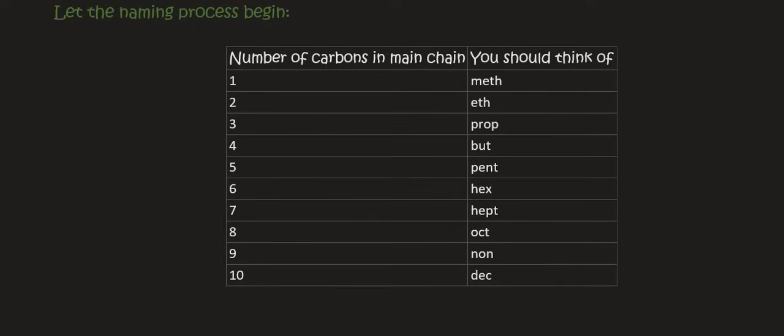The most important thing that we're going to have to learn and start memorizing is the following table. This table is going to be your friend. When you look at the specific molecule that you are given, you're going to count the number of carbons in the main chain.